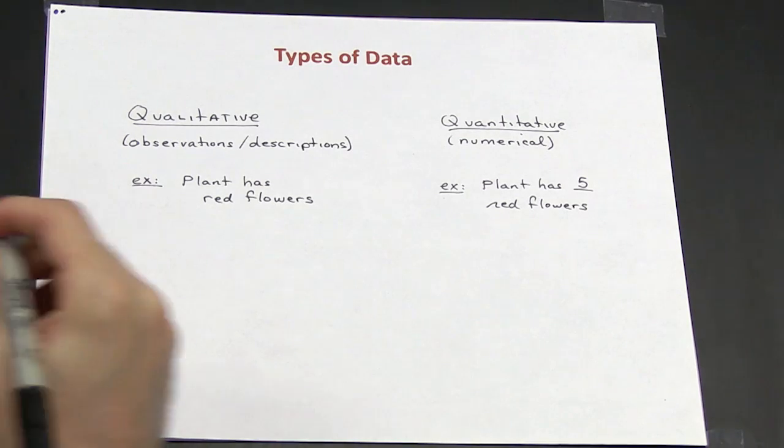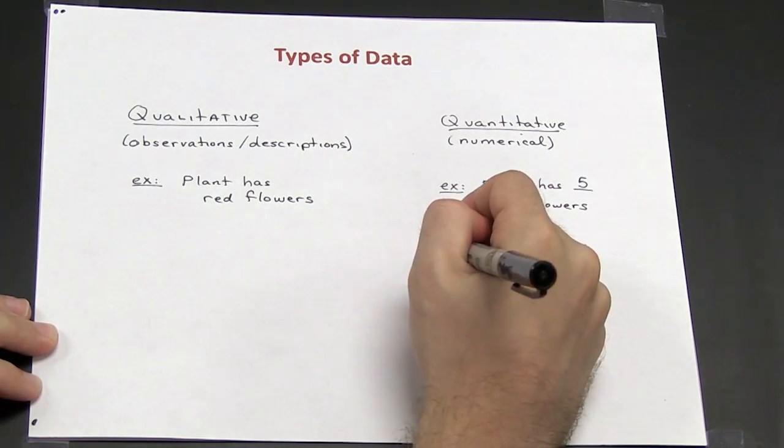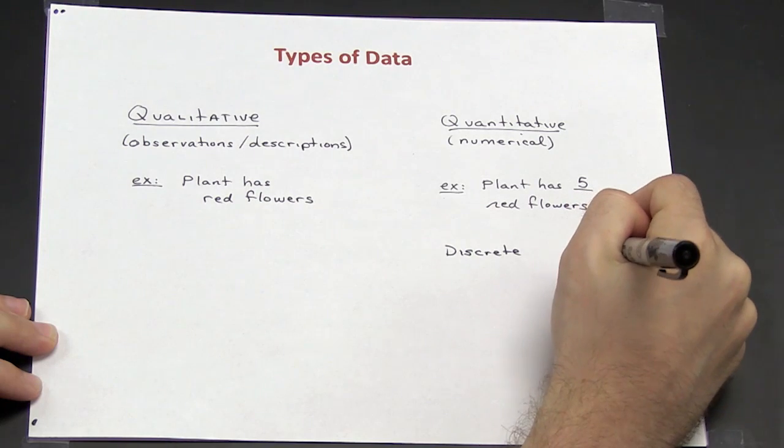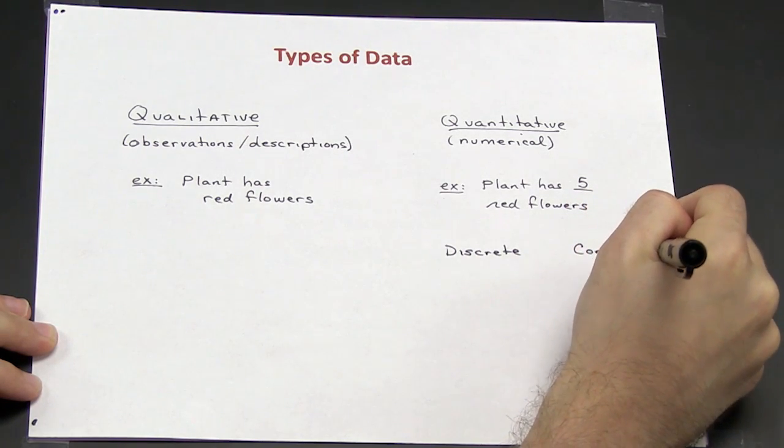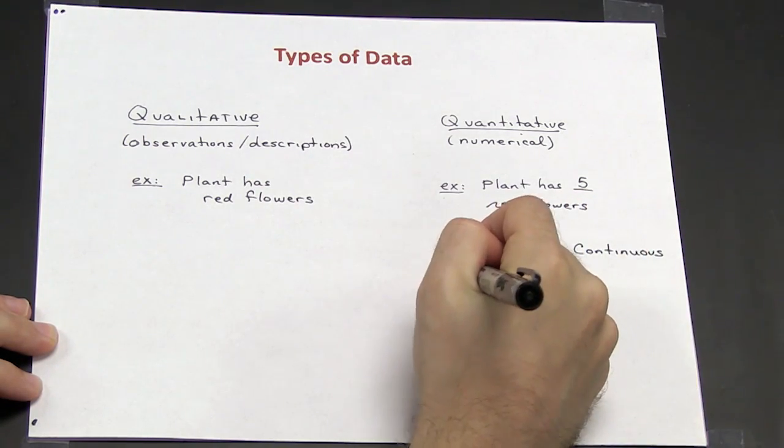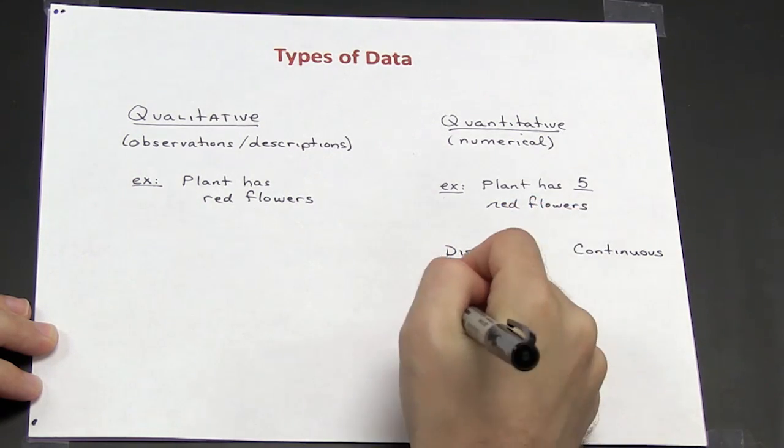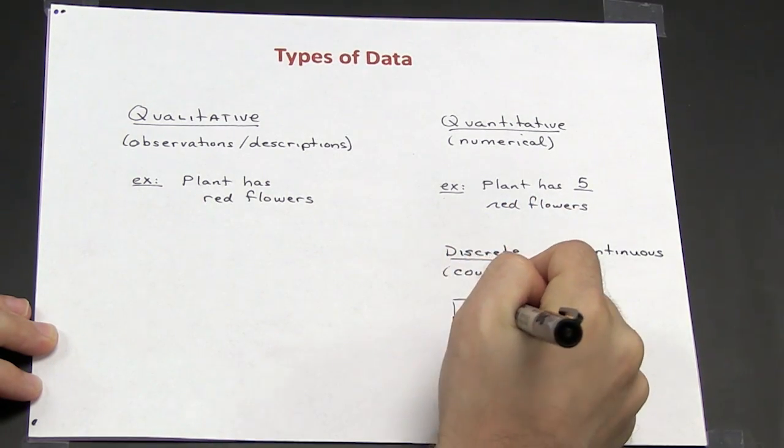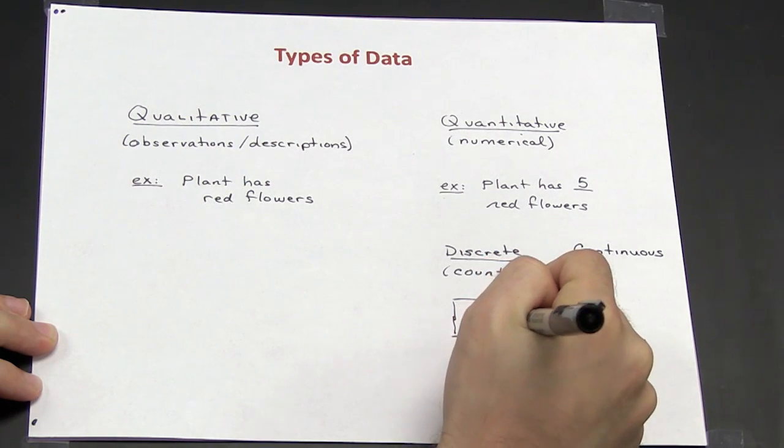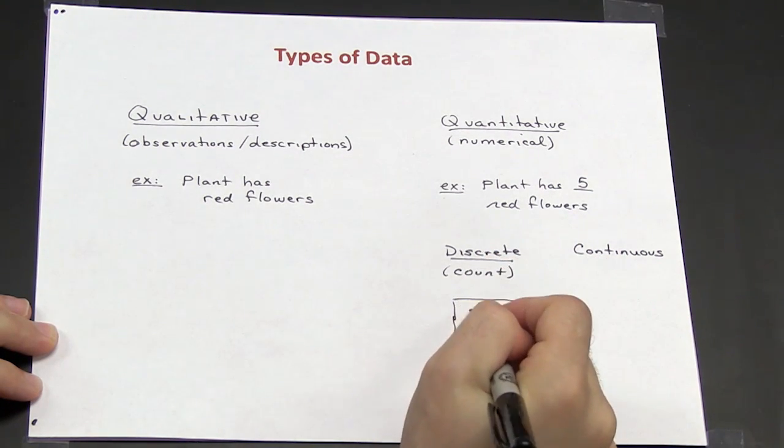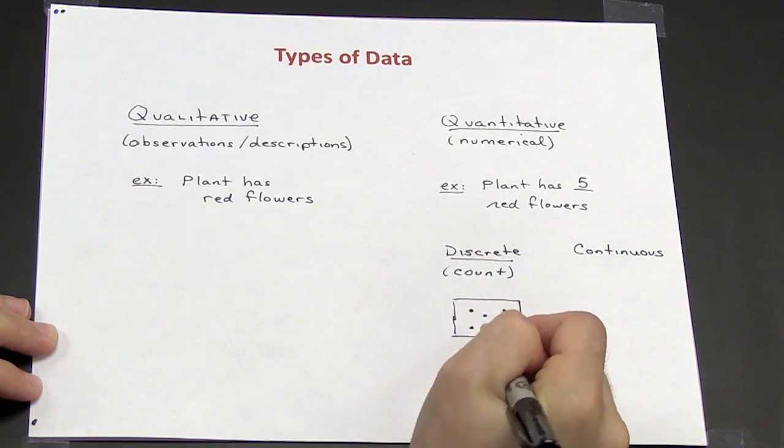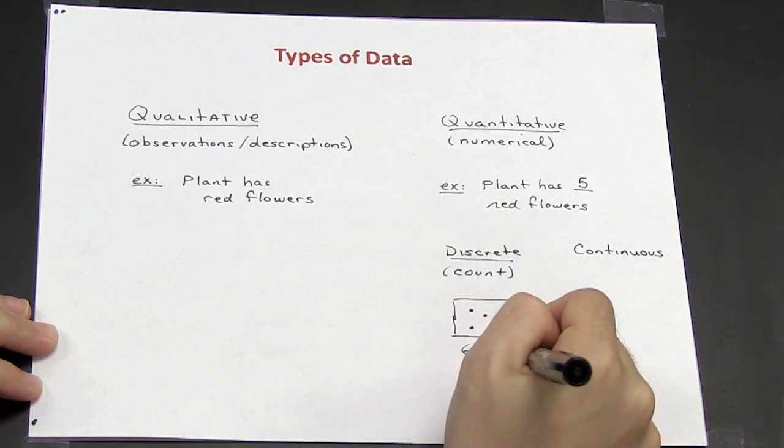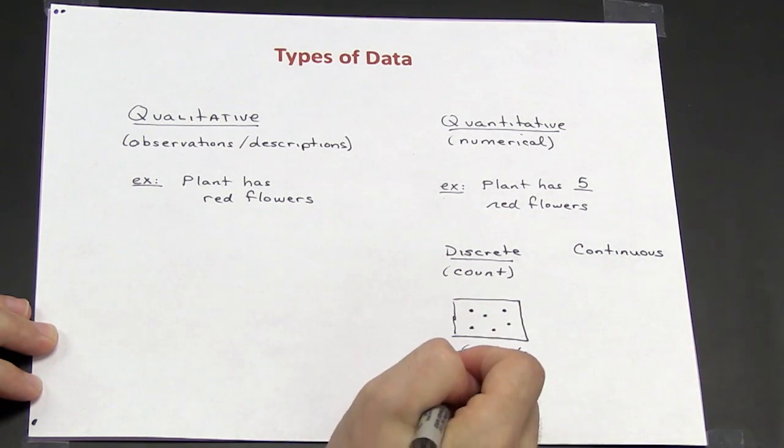Quantitative data can be broken up into either discrete or continuous data. Discrete data is the result of a count. So for example, if I have a plot and I have plants in the plot, we see that I have one, two, three, four, five, six plants. That is a discrete measurement.